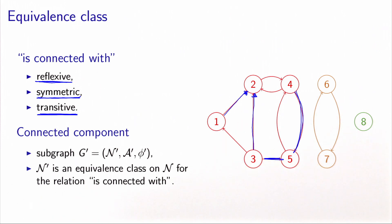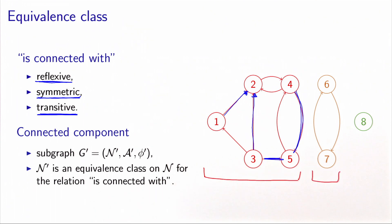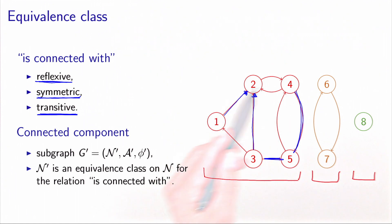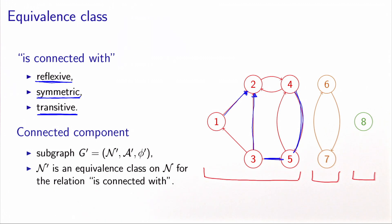If you look at this picture, nodes one, two, three, four, and five are all connected with each other, so they represent one class. Nodes six and seven are also connected with each other. And node eight is not connected to anybody except itself, so it forms a class as well. The nodes within a class are all connected with each other and are not connected with any node in a different class. These classes, defined by the relationship isConnectedWith, are called connected components. A connected component is a subgraph such that all the nodes within the subgraph are all connected with each other.